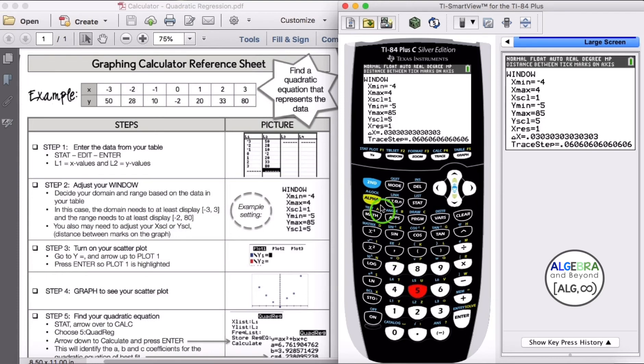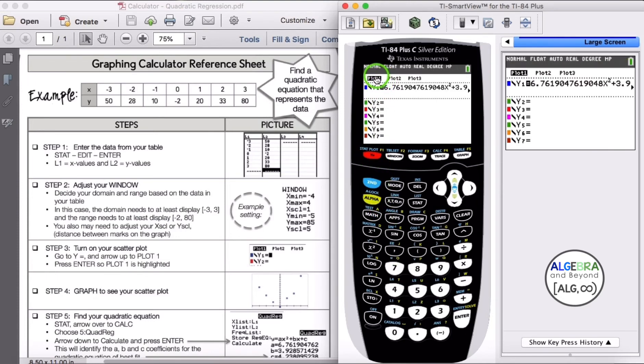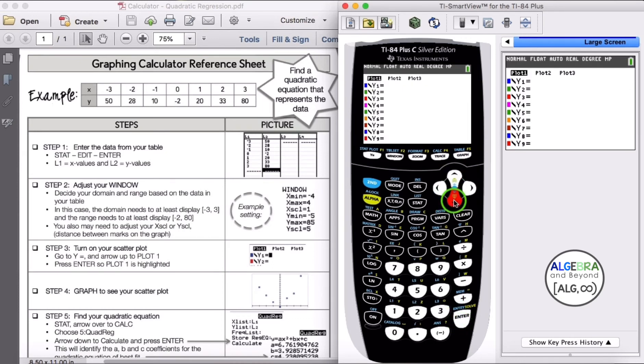Step 3, we want to turn on our scatter plot. So we're going to go to Y equals, and we want to make sure that plot 1 is highlighted. So plot 1, we can arrow up. If it's not, you want to click enter to highlight it. All right, so it is highlighted.